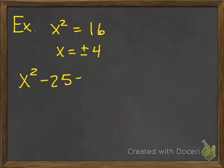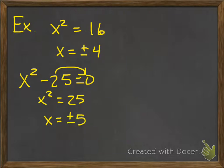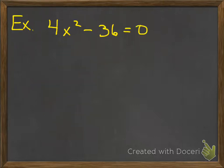What if x squared minus 25 equals 0? Before taking the square root, move 25 to the other side: x squared equals 25. Notice the sign changed from minus to plus. Then take the square root: the square root of 25 is 5, so x equals plus or minus 5.